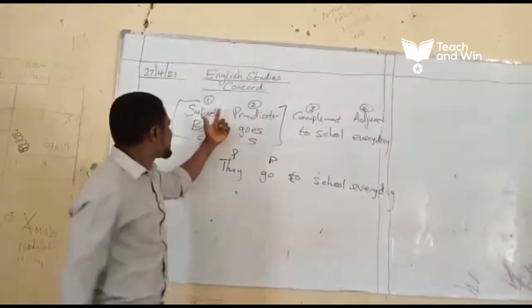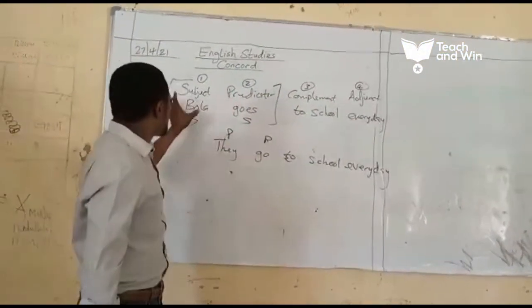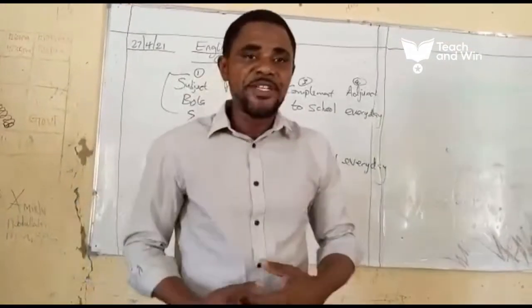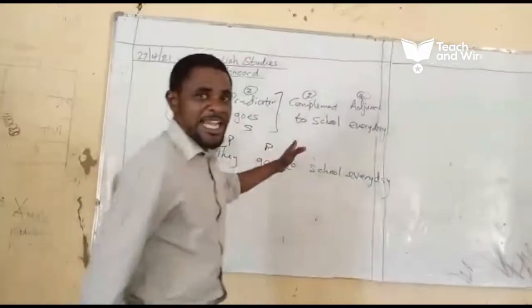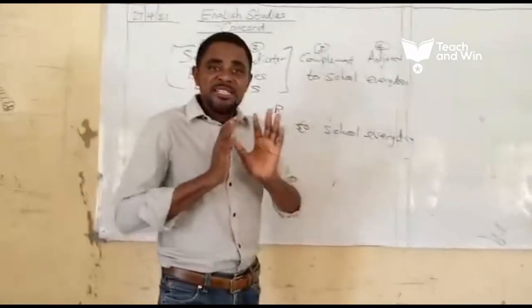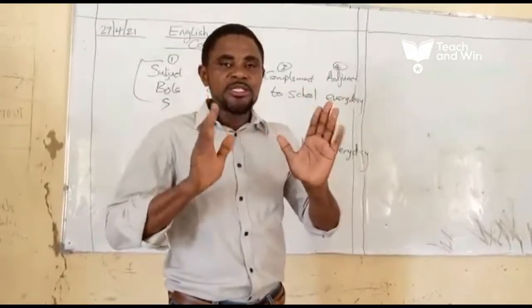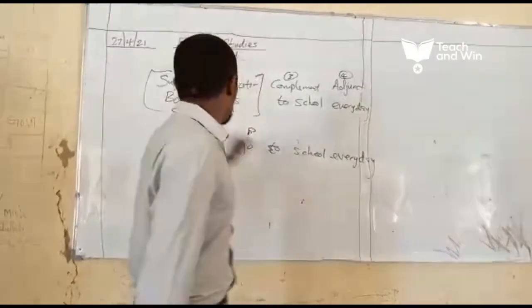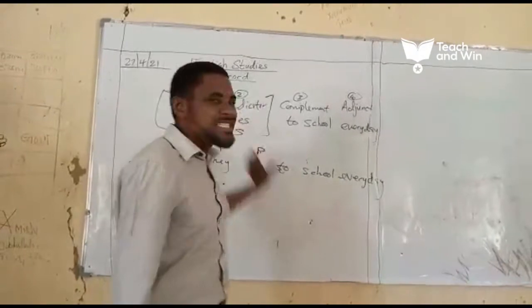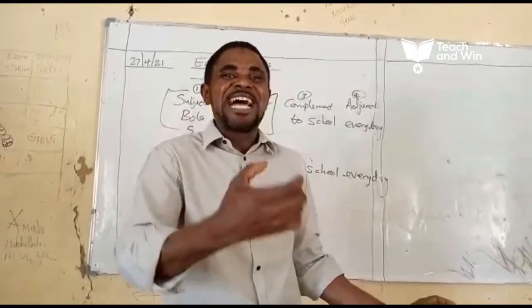So, with this, we can see: this is subject, this is predicator, complement, adjunct. Bala goes to school every day. That's the correct sentence. For a correct sentence to be formed, what we need is the concord — the subject and the predicator must be agreed. Bala is a singular noun, while goes is a singular verb.